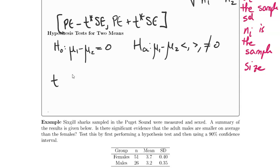Our test statistic is the difference in the two sample means minus the claimed null value of zero, which we typically will omit from the calculation, divided by the standard error.